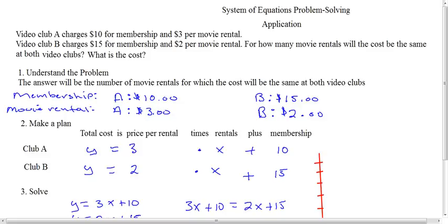So in order for us to understand the problem, we need to determine what the problem is asking us to do. We want to list the important information. The problem is telling us to give the number of movie rentals where, no matter where you rent it, from A or B, the cost will be the same.